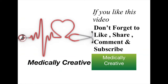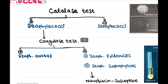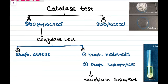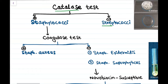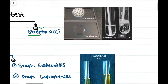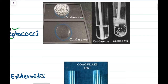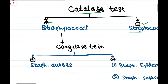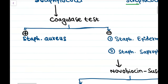In this video we will rapidly revise some important bacteria. Starting with Staphylococcus: Staphylococcus is differentiated from Streptococci by the catalase test. Staphylococci are catalase positive and Streptococci are catalase negative.